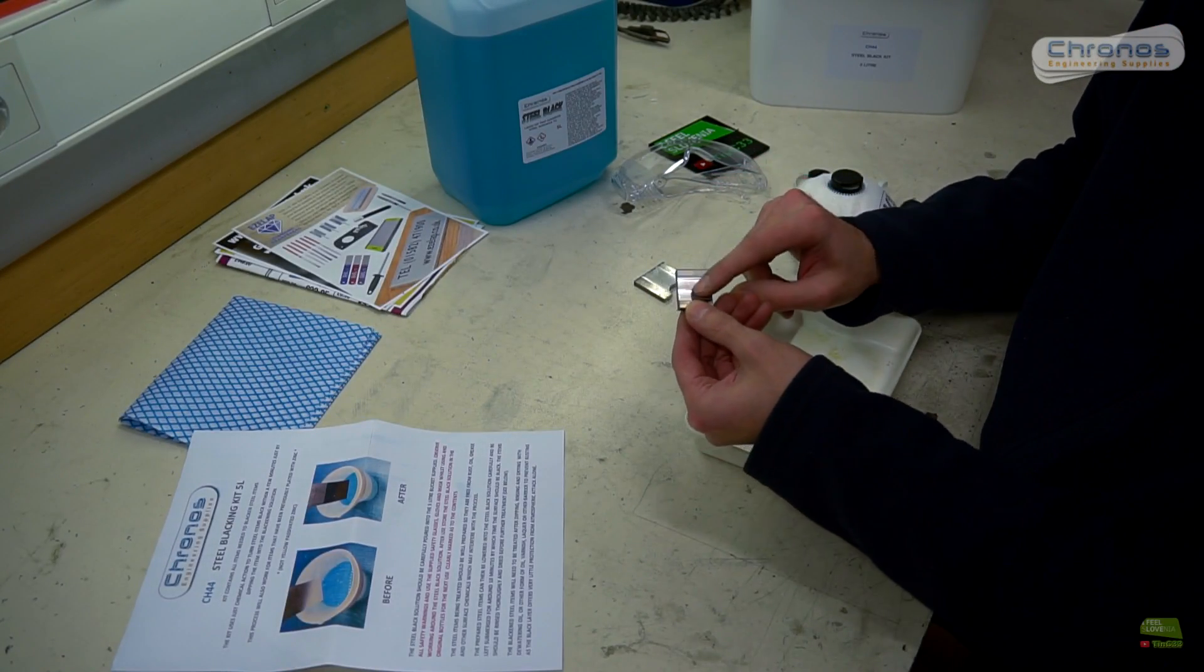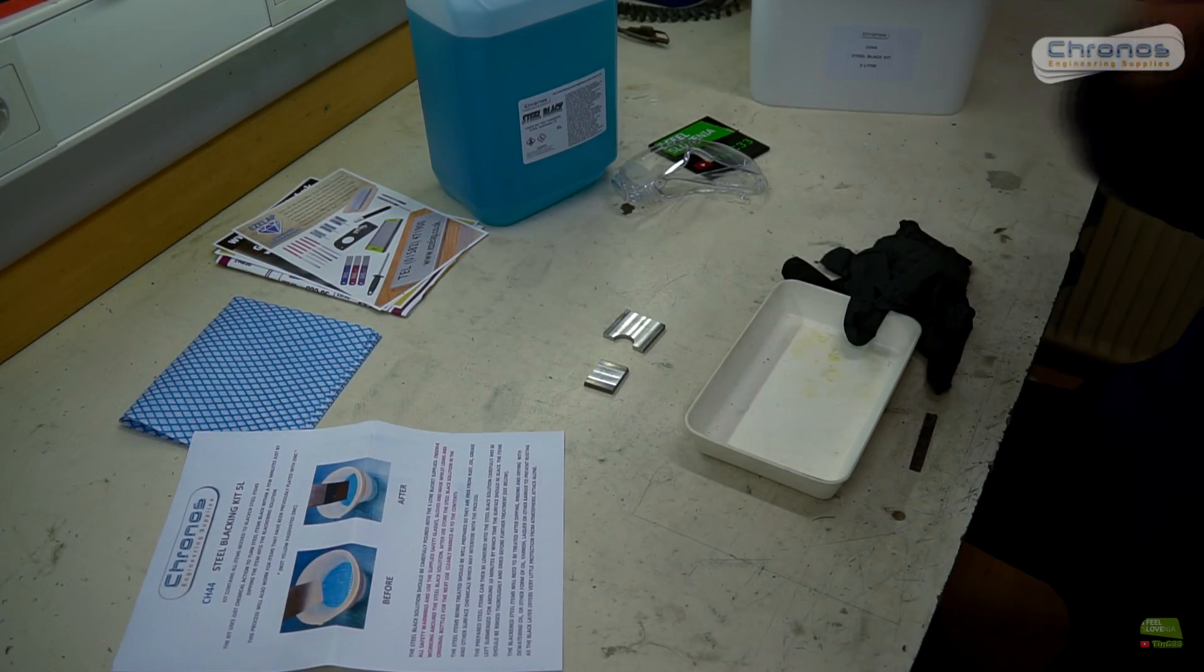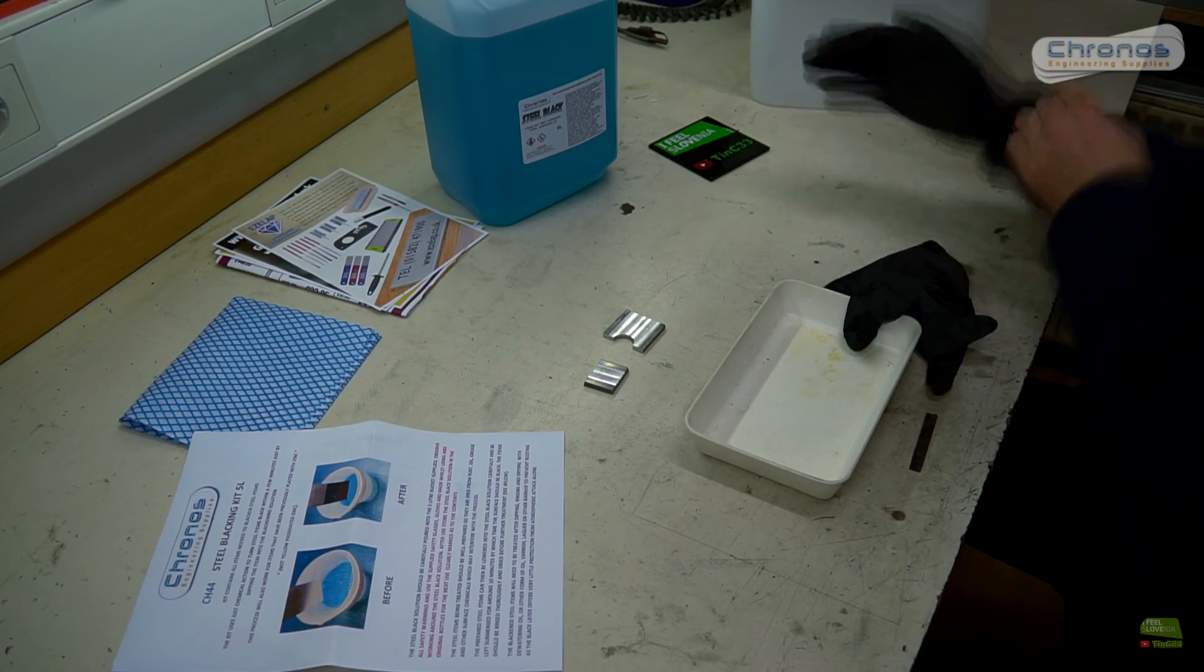Okay, here I got two pieces of steel, so let's try to blacken them. Manual says protection equipment, so firstly apply respirator, protective glasses and gloves.